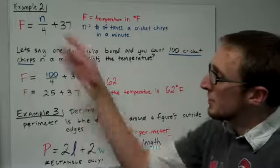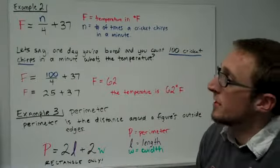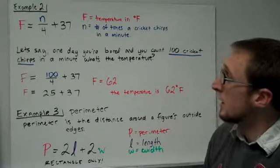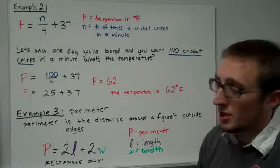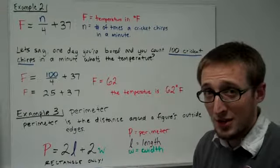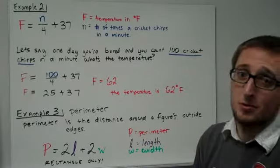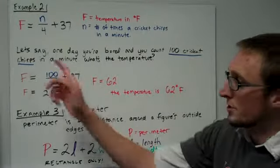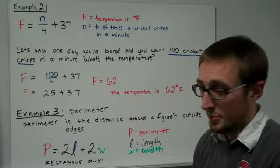Another cool example would be F equals N over 4 plus 37. F is actually the temperature in Fahrenheit. N is the number of times a cricket chirps per minute. So these are actually related. You can figure out the temperature from just the number of times a cricket is chirping. So say one day you're really bored and you count 100 cricket chirps in a minute. What would the temperature be?